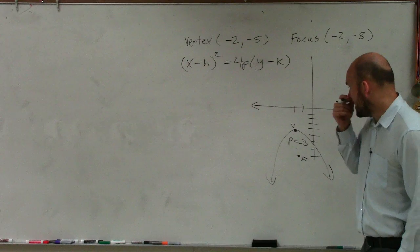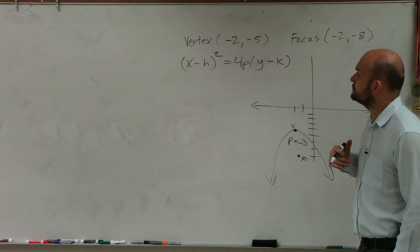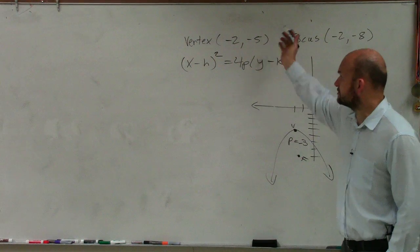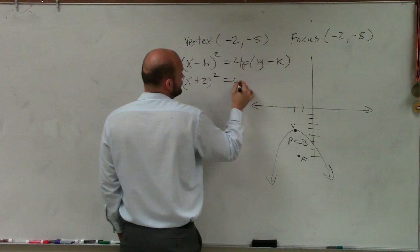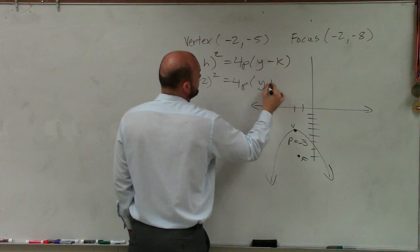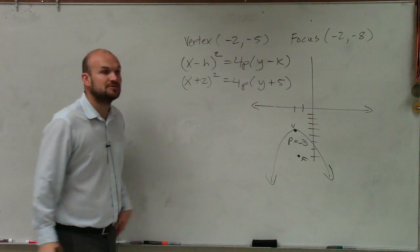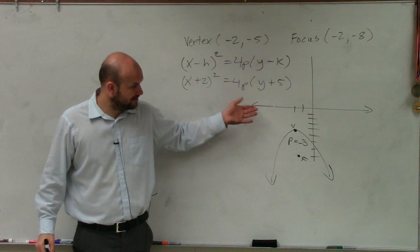So in this equation now, what we need to do is we already know our vertex, which is there. So that's easy. So that would be x plus 2 squared equals 4p times y plus 5. Now, do we know what p is? Yeah.